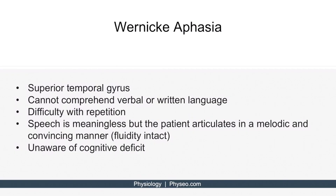The next topic is Wernicke aphasia. Wernicke's area is located in the superior temporal gyrus, which we'll look at in a moment. If this region of the brain is damaged, then patients will present with several key findings. First, their ability to comprehend verbal or written language is impaired. Second, they have difficulty repeating phrases.